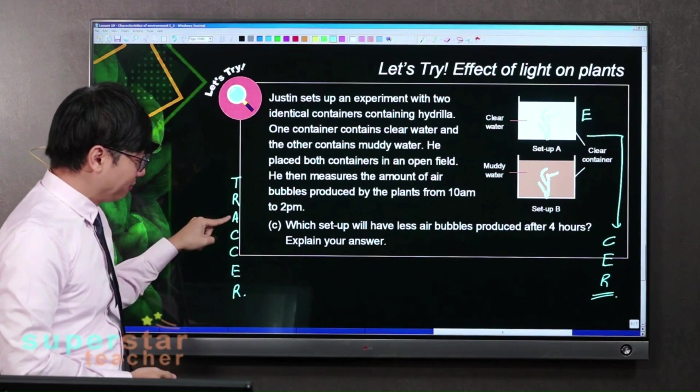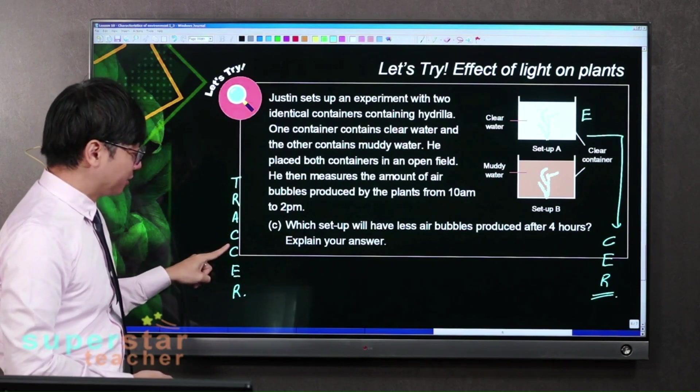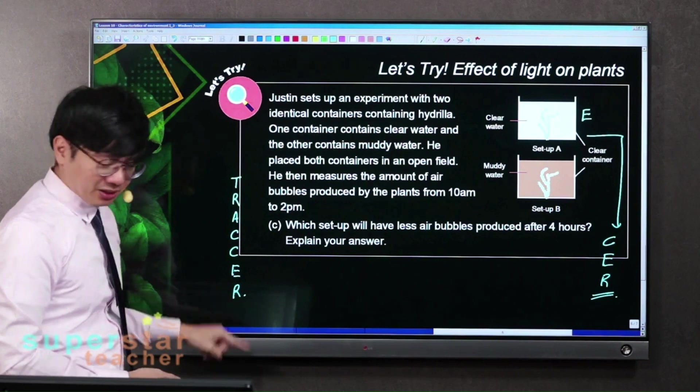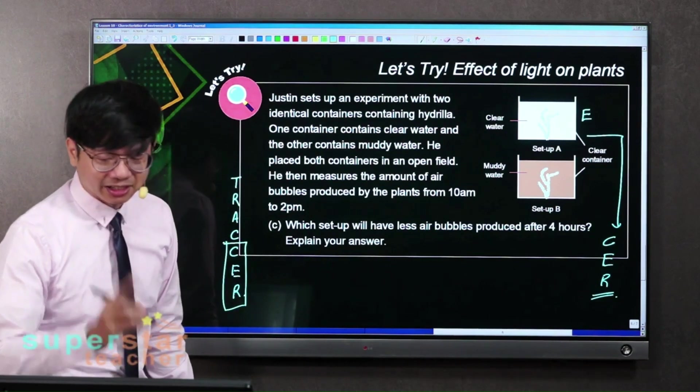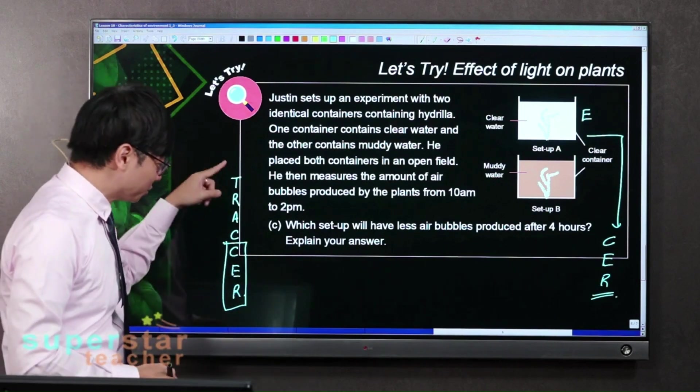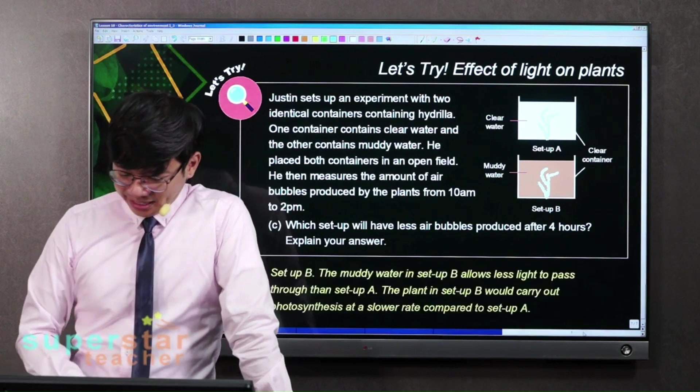Then A is the aim. Then C is compare. Then after compare, you make a claim. Then you have the evidence, you have the reasoning. So now Mr. O only asked you to do the last three, the CER. You should be very thankful because I didn't ask you to do the TRACER. I only asked you to do the CER at the end.